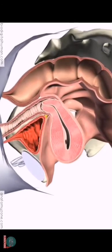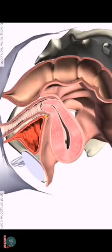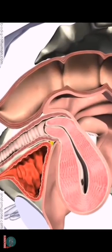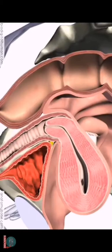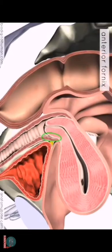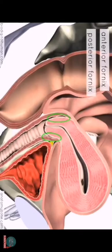Looking at this cross-sectional model, you can see the way the dome-shaped cervix protrudes into the vagina. By protruding into the vagina in this way, the cervix creates recesses around it. Anteriorly you've got this recess, and posteriorly you've got this recess, where the cervix meets the vaginal wall. These pockets around the vagina are known as the fornix. So you've got an anterior fornix anteriorly, a posterior fornix behind, and two lateral fornices.